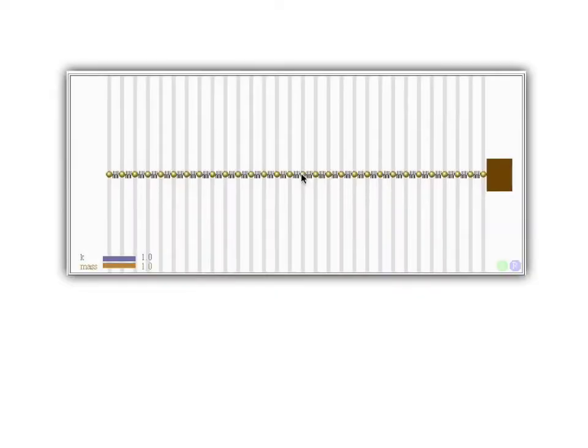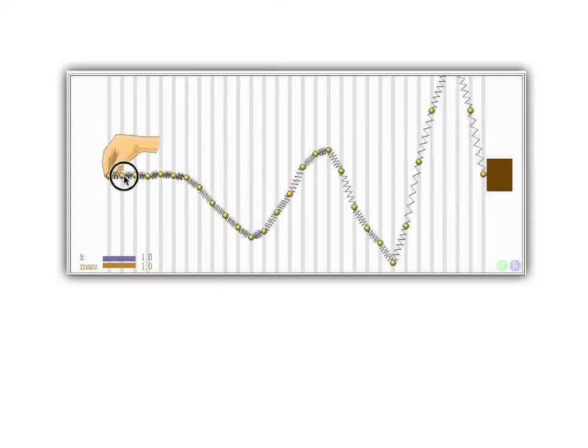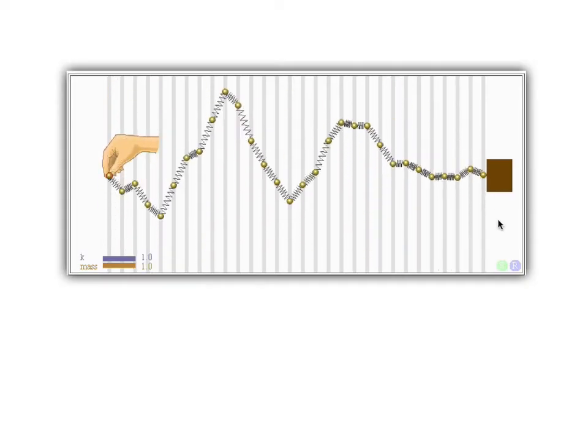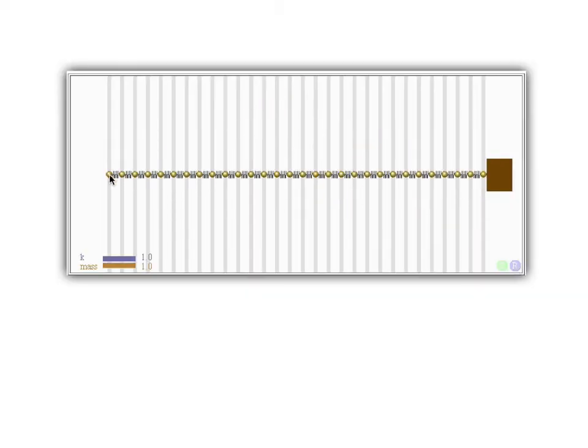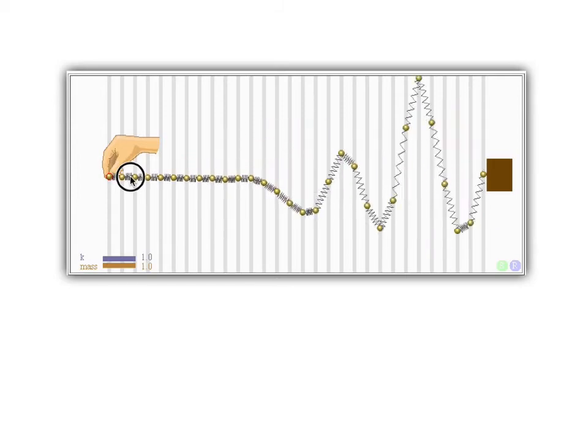To answer this question, we're going to study a super simplified system, which is just this series of gold masses that are connected by springs. We're going to take the left end and just shake it up and down. And notice when we do that, something seems to be traveling along the spring, but the masses do not move along the spring. They just kind of move up and down when the wave goes by.